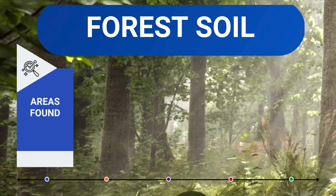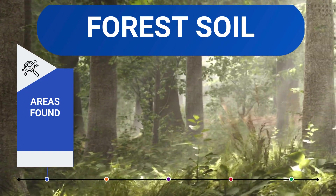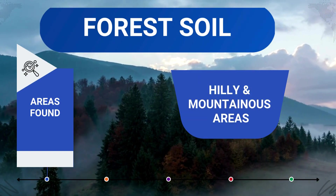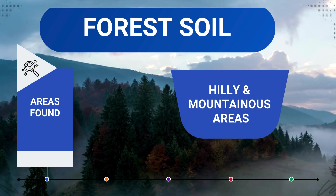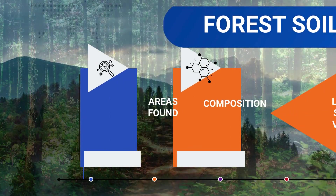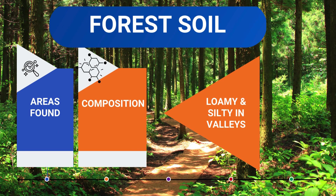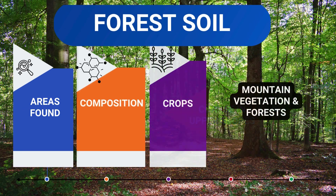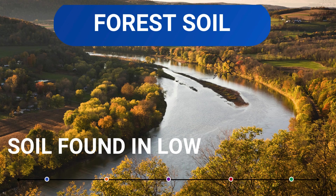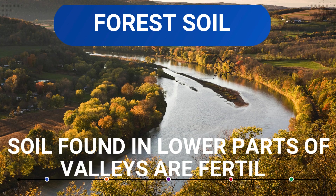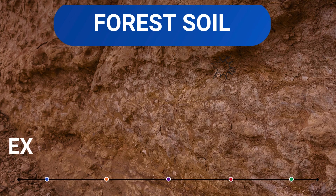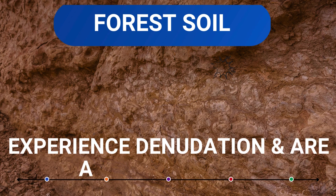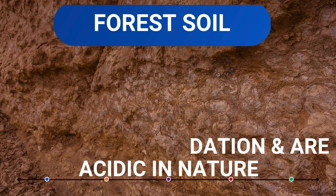Forest Soil is the last kind of soil. As the name suggests, it is found in the hilly and mountainous regions of India. In terms of composition, it is loamy and silty in the valleys, whereas it is coarse in the upper slopes. Mountain vegetation and forests are found here. The soil found in the lower part of the valleys is extremely fertile. However, this kind of soil experiences denudation and is acidic in nature.